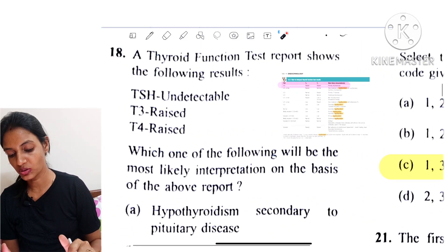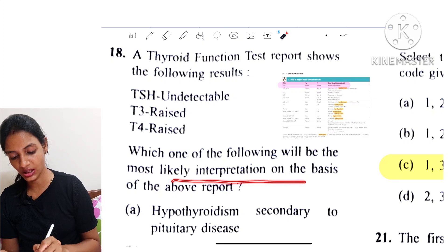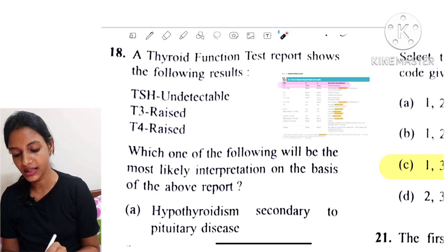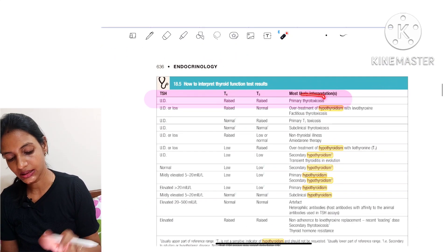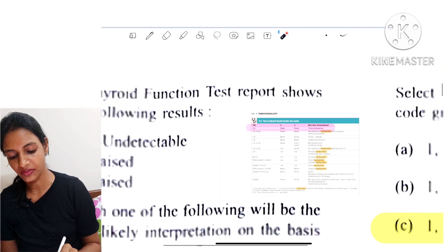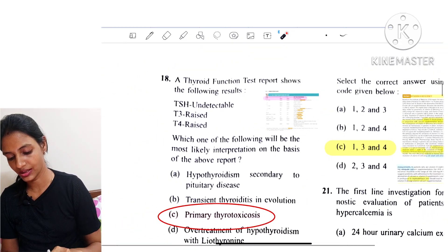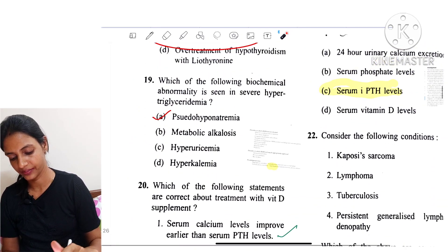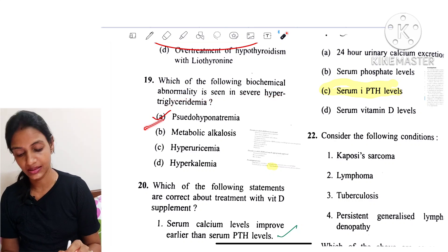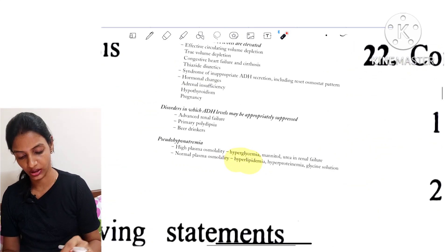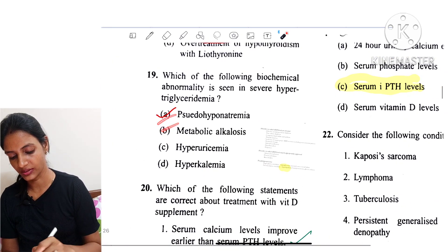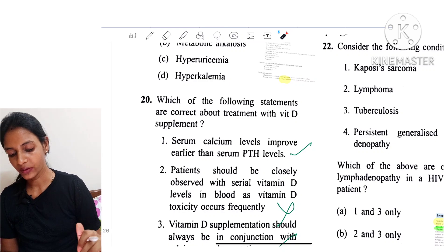Question 18: A thyroid function report shows T3 and T4 raised while TSH is undetectable. In primary thyrotoxicosis, TSH is undetectable while T4 and T3 are raised. So the answer is primary thyrotoxicosis. Question 19: Which biochemical abnormality is seen in severe hypertriglyceridemia? The answer is pseudohyponatremia, which occurs in hyperlipidemia.